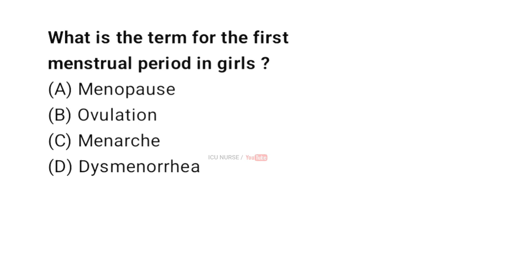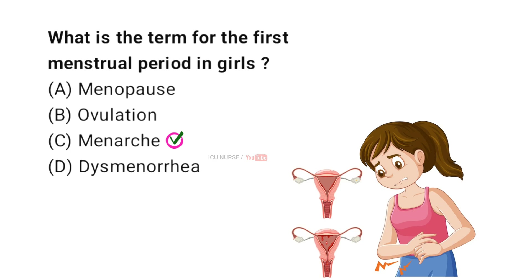What is the term for the first menstrual period in girls? Menarche is the term used for a girl's first menstrual period, marking the beginning of her reproductive years.